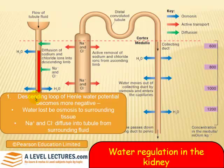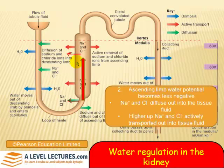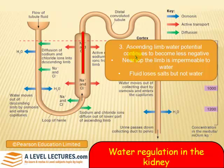In the descending loop of Henle, water potential becomes more negative — water is being lost by osmosis to the surrounding tissue and sodium and chloride ions are diffusing in, so you're going to have a lower water potential. In the ascending limb, water potential becomes less negative as sodium and chloride are diffusing out into the surrounding tissue fluid. Up here there is active transport of sodium and chloride ions. The ascending limb water potential becomes continuously less negative, and near the top the limb is impermeable to water — so at the top, water doesn't move out of the ascending limb. It loses salt but not water.